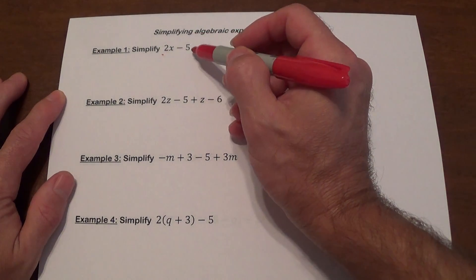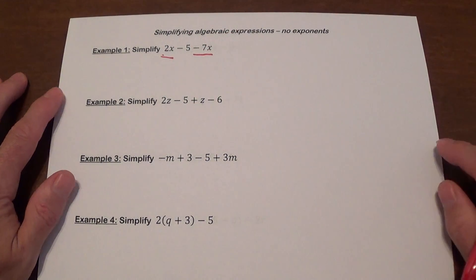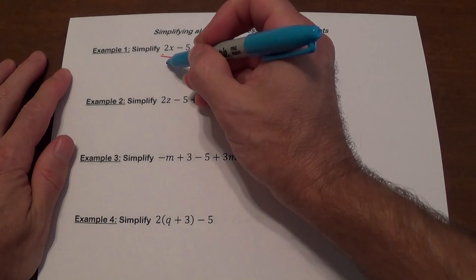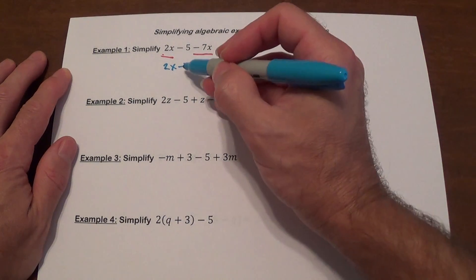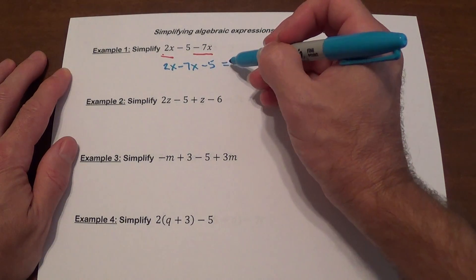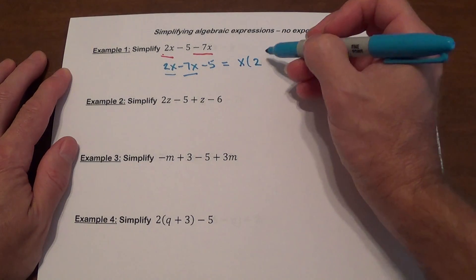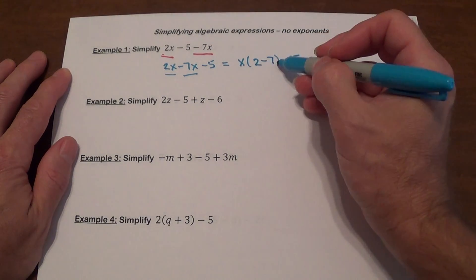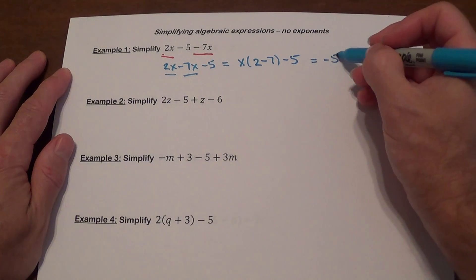Looking at this first example, we've got 2x minus 5 minus 7x. So 2x and minus 7x are going to be our like terms and those are going to be combined. We rewrite it as 2x minus 7x minus 5. We can rearrange the terms as long as we keep the sign in front the same. We factor out x, giving us parenthesis 2 minus 7, then minus 5. And 2 minus 7 gives you negative 5. So our answer is negative 5x minus 5.